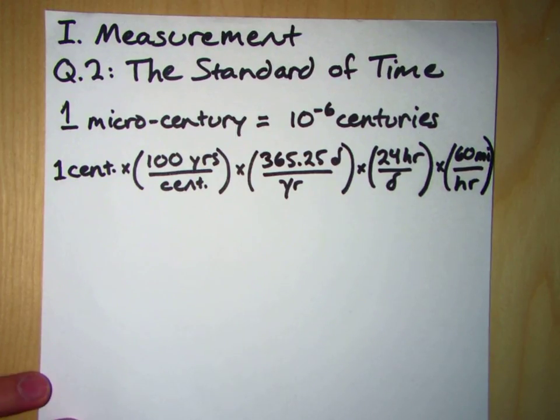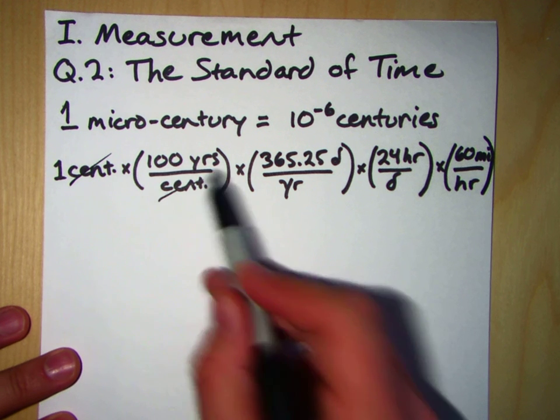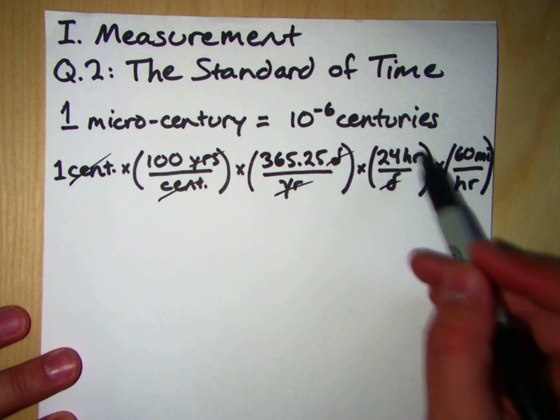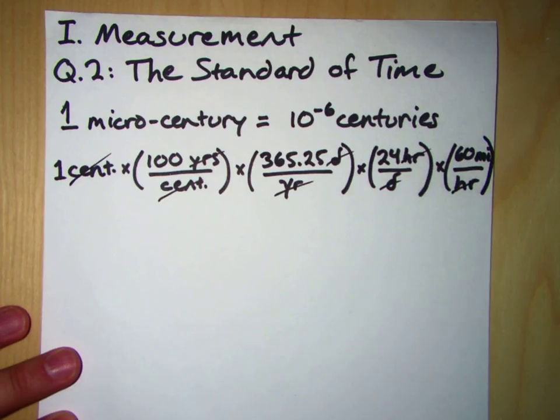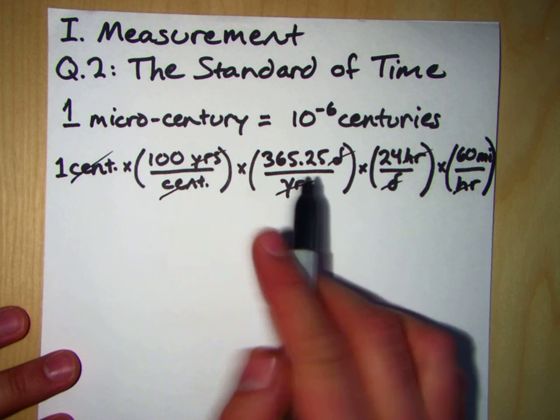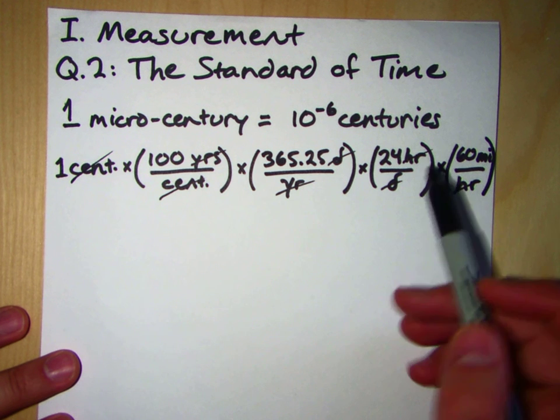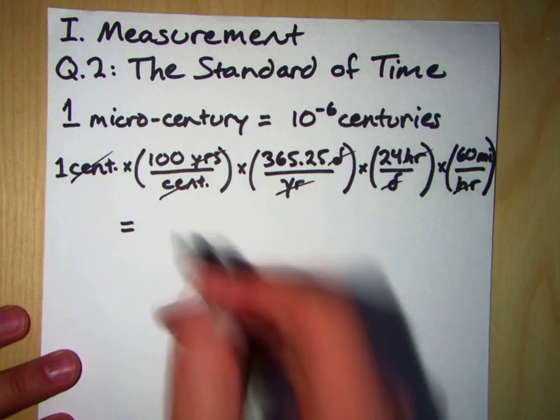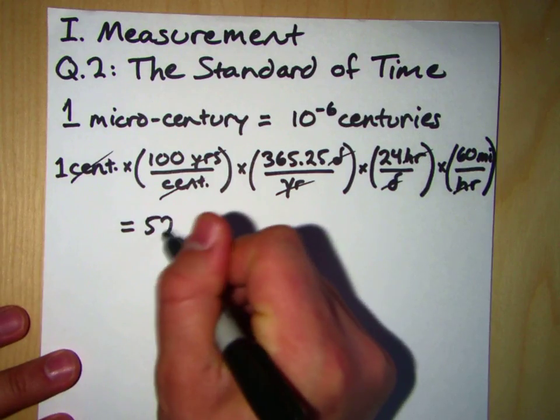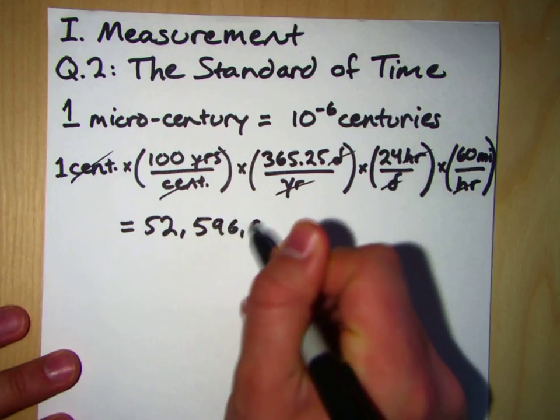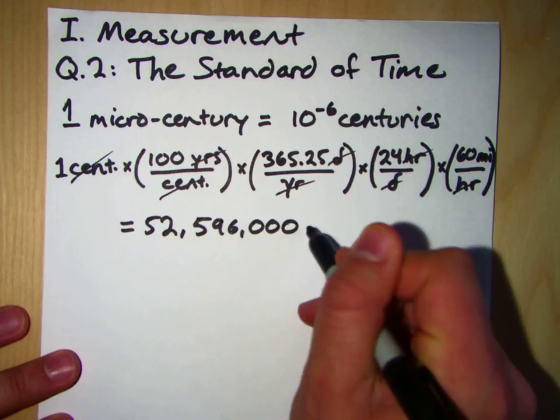I need to give myself more room next time. Okay, so all we have to do now in this case, we see that the centuries cancel out with the centuries, the years will cancel out with the years, the days will cancel out with the days, and the hours will cancel out with the hours. Which leaves us, and this is a pretty big number here, this is 100 times 365.25 times 24 times 60. This gives us a century is equal to 52,596,000 minutes.